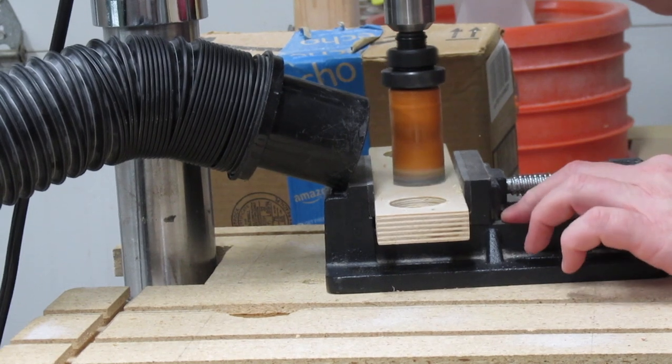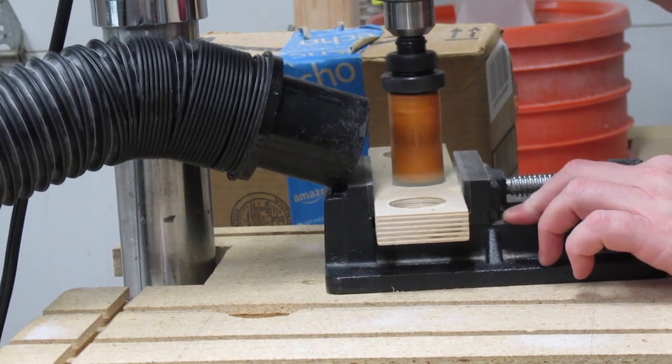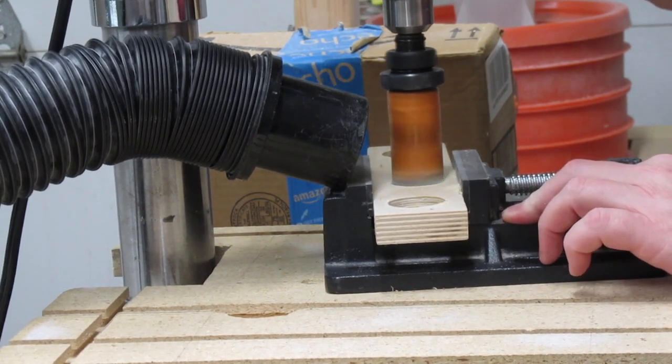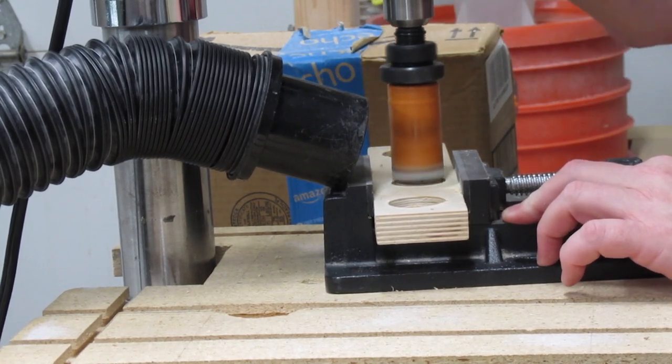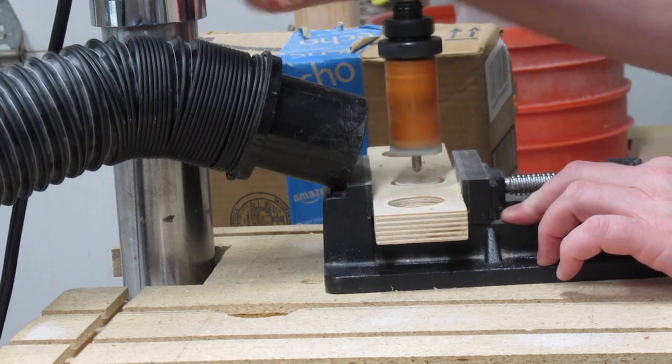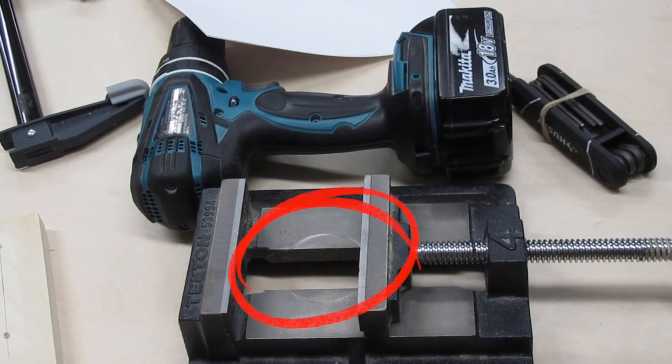I use a drill press vise whenever I can. It works great, as long as you remember to stop before cutting into the vise. If you use the two-sided method, this shouldn't be a problem as long as you're paying attention. And this is what happens when you're not paying attention.